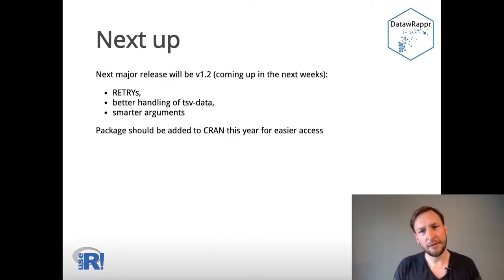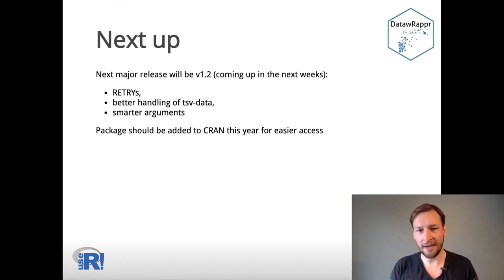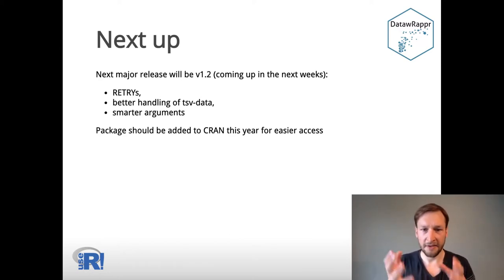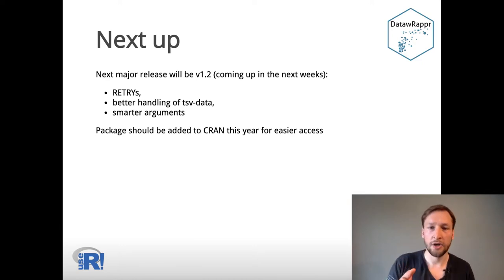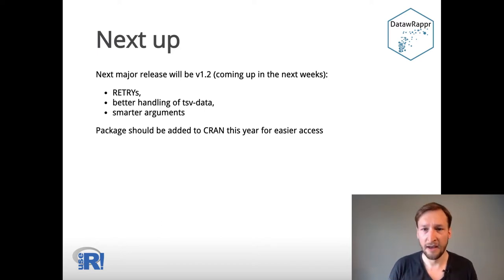The next major release will bring increased API handling. By using retries for the most important functions, it will also handle non-CSV formats better, and a couple of arguments should work smarter. This next release, version 1.2, should be up within the next couple of weeks. I will also try to make the library accessible via CRAN this year to simplify the download process.